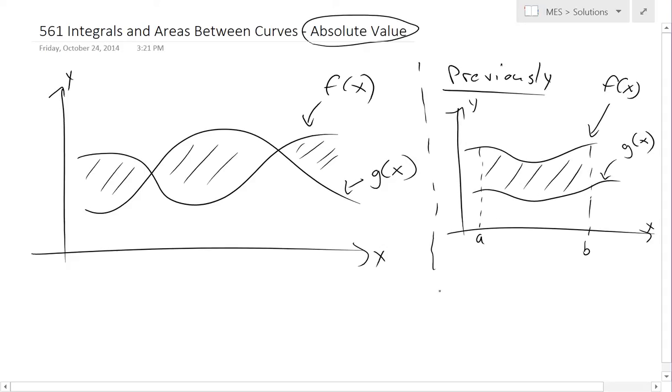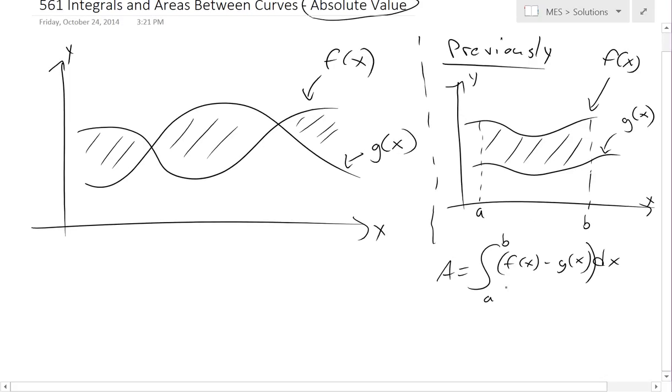I was able to show that you could get the area as integral from a to b of f of x minus g of x times dx right there. So, this was the area between these, but we can't apply the same thing here,